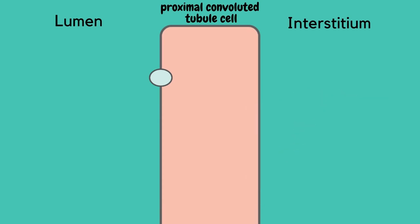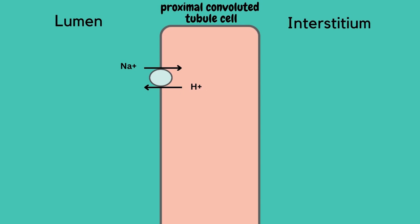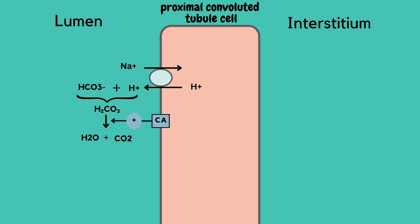Sodium bicarbonate reabsorption by the proximal convoluted tubule is initiated by the action of a sodium-hydrogen exchanger NHE3 located in the luminal membrane of the proximal tubule epithelial cell. This transport system allows a sodium ion to enter the cell from the tubular lumen in exchange for a hydrogen ion from inside the cell. The hydrogen ion secreted into the lumen combines with bicarbonate to form carbonic acid, which is rapidly dehydrated to carbon dioxide and water by carbonic anhydrase.